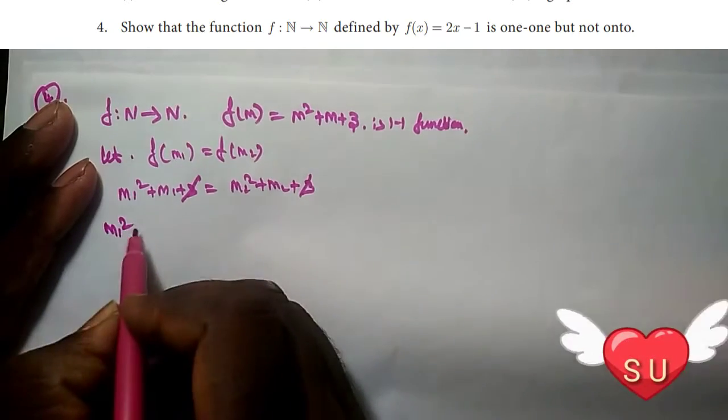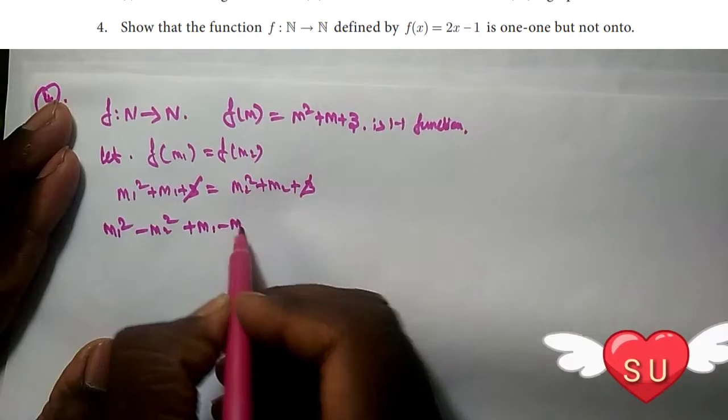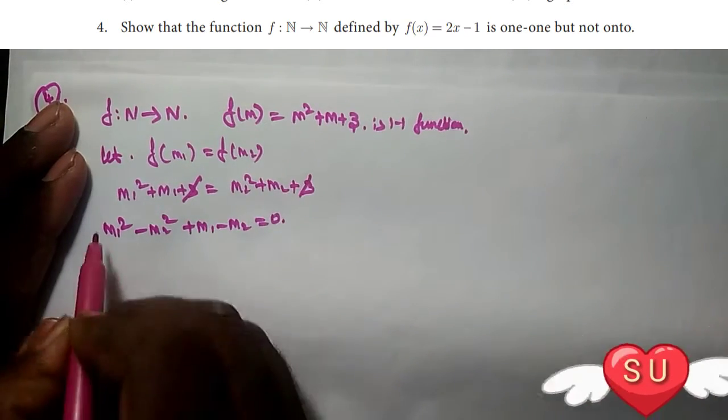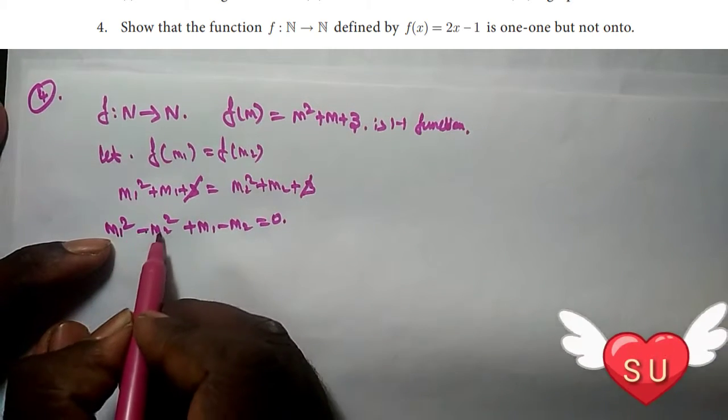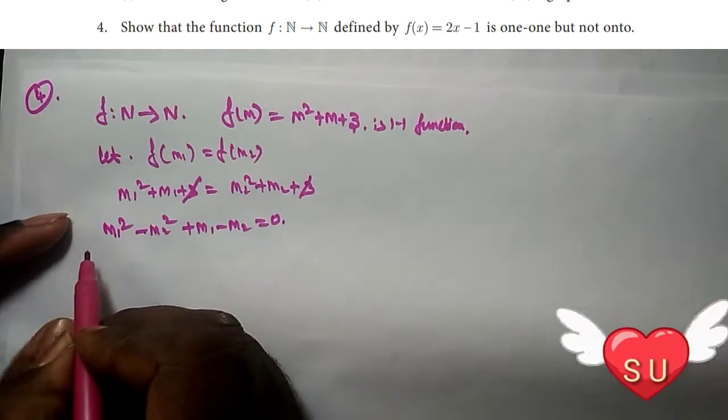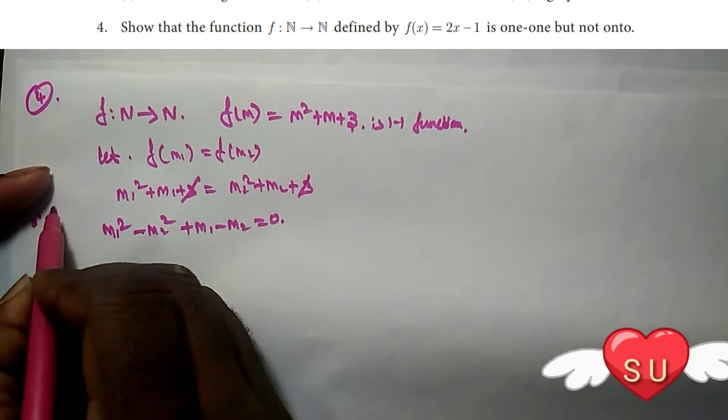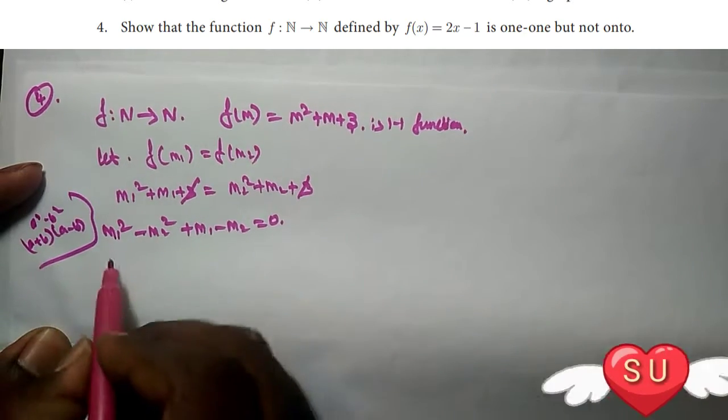We get m1 squared minus m2 squared plus m1 minus m2 equals zero. Now m1 squared minus m2 squared is in the form a squared minus b squared. Using the formula a squared minus b squared equals (a plus b)(a minus b), we can factor this.